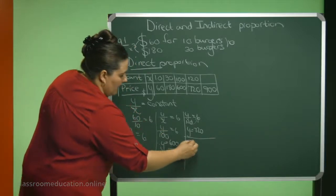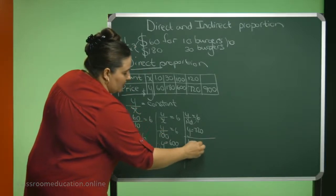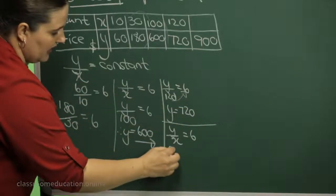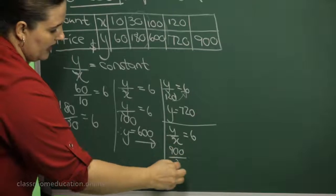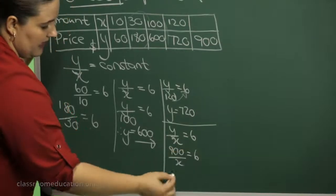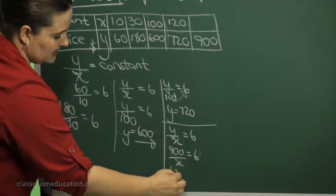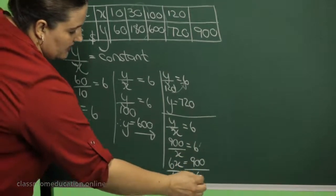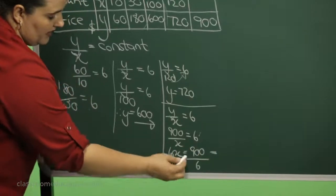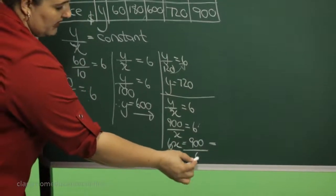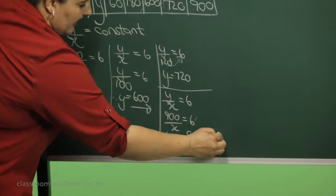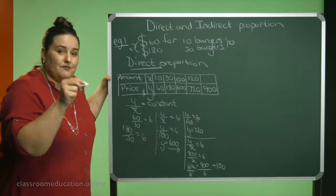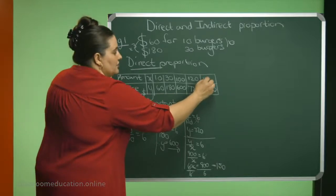I have Y divided by X should give me a 6 in this example. So my Y is 900 divided by my X should be a 6. And then I can multiply, so 6X equals 900. Then I divide by a 6 to get the X alone. So 900 divided by 6 will be 150. So you can buy 150 burgers with $900.